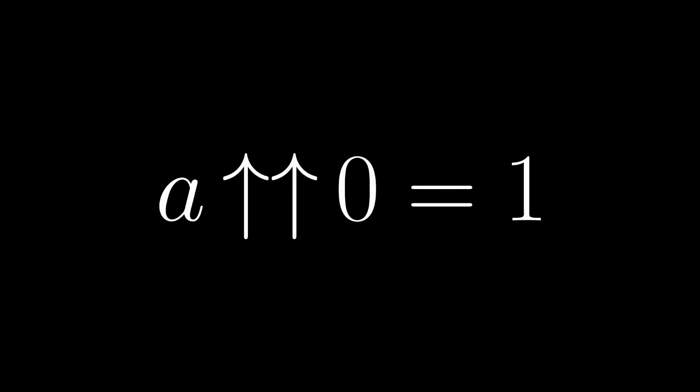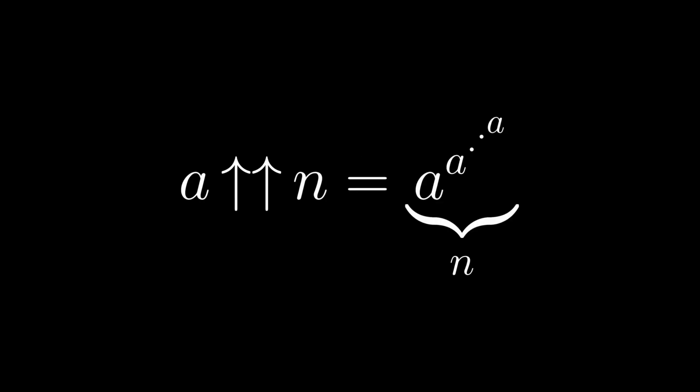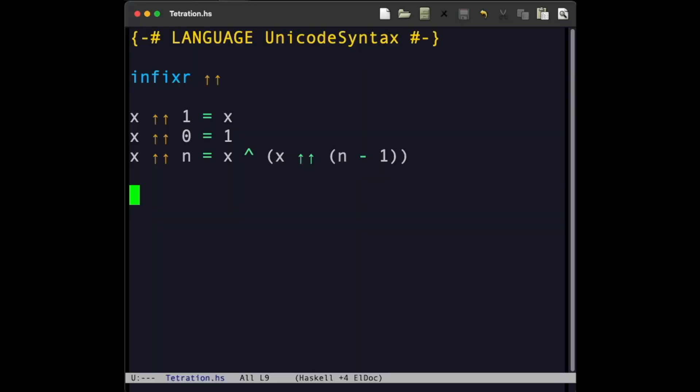Like exponentiation, we define the Tetration of anything with a height of 0 to be 1. We can use this definition to easily write a function to compute Tetration. In the programming language Haskell, we can define a double-arrow operator like this, that recursively applies exponentiation.